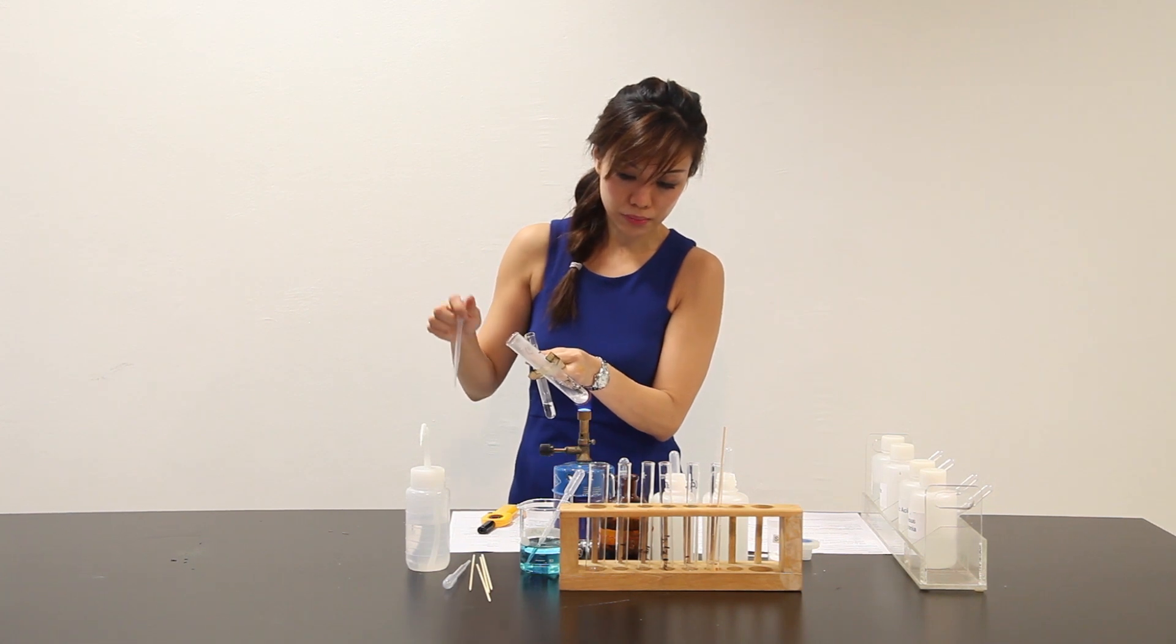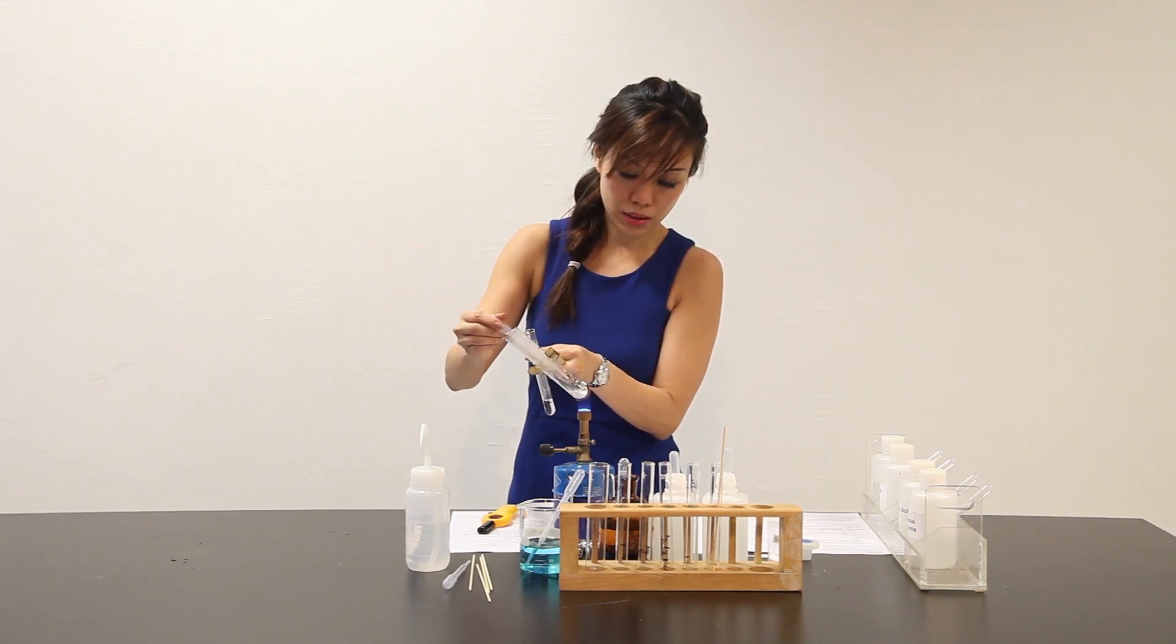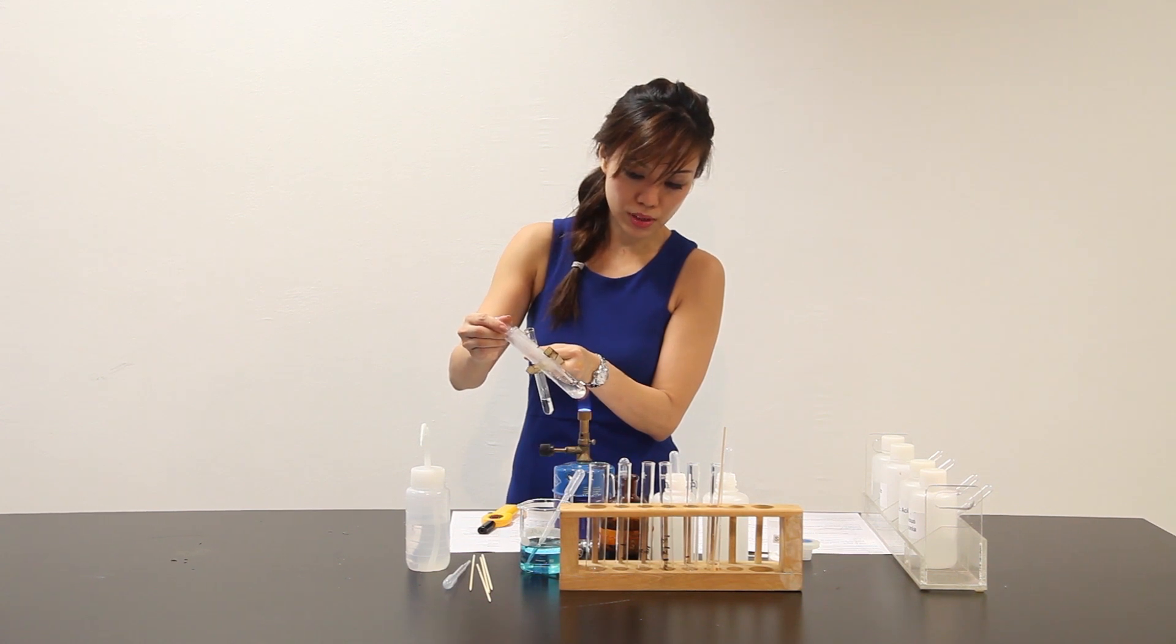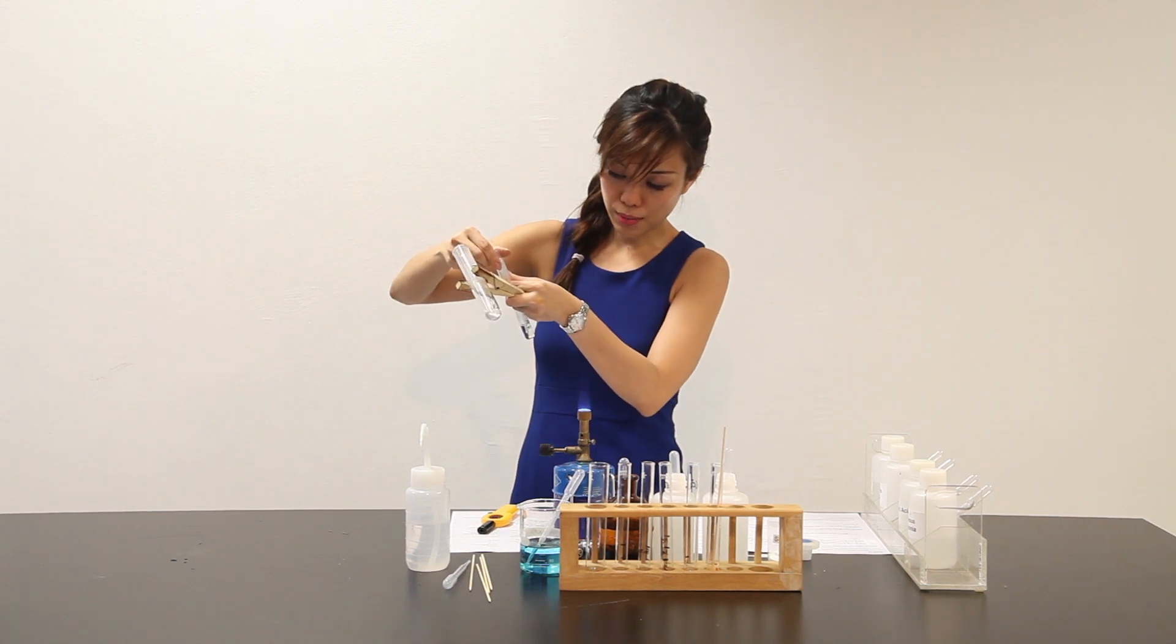Heat some more. Put your tip pipette in. Count one thousand, two thousand, three thousand. Take out again. Bubble through the lime water.